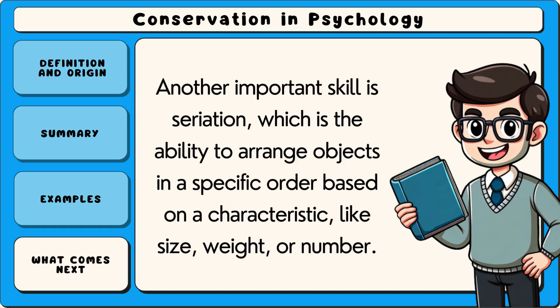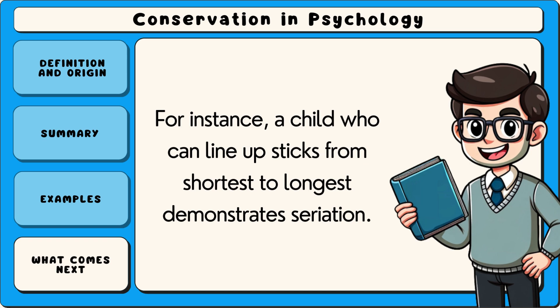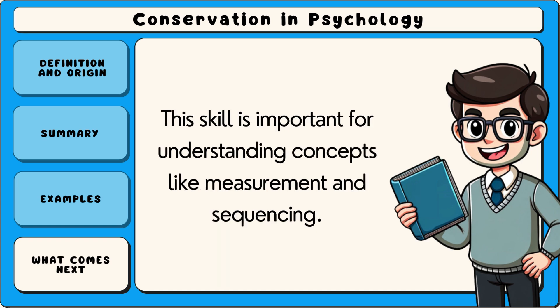Another important skill is seriation, which is the ability to arrange objects in a specific order based on a characteristic like size, weight, or number. For instance, a child who can line up sticks from shortest to longest demonstrates seriation. This skill is important for understanding concepts like measurement and sequencing.